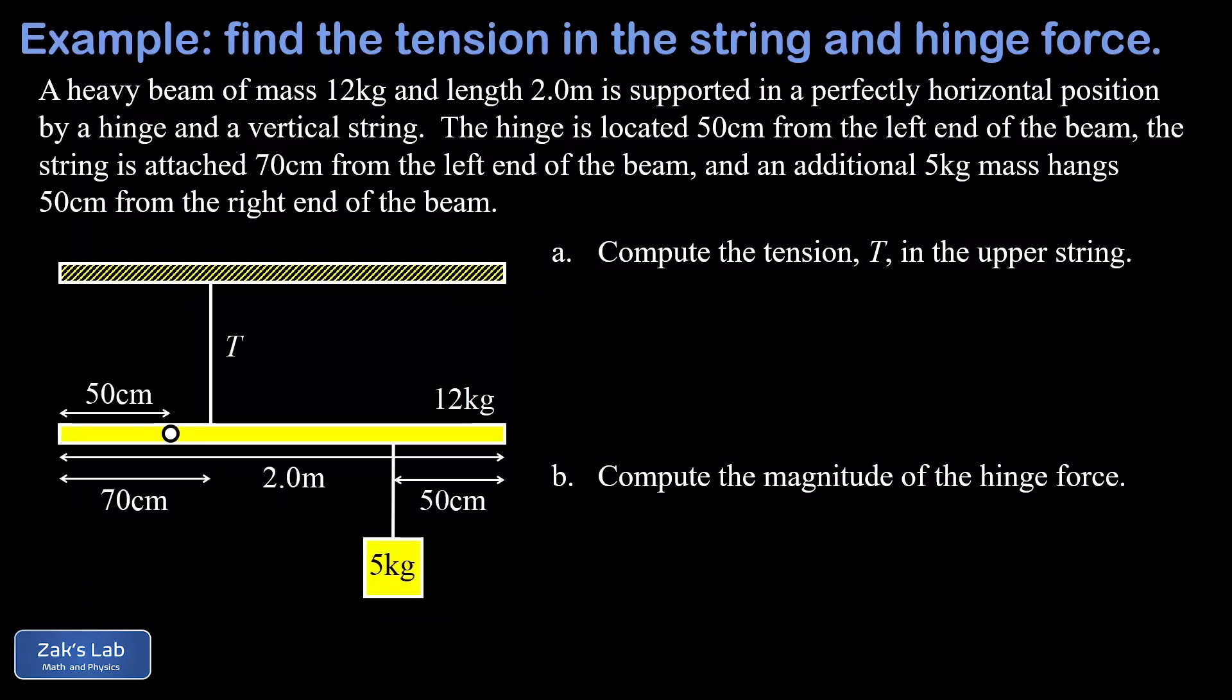In this video we're solving a classic static equilibrium problem where we have a heavy horizontal beam. This has a mass of 12 kilograms and it's suspended from a hinge and a string. So the hinge is this little white spot over here and then we can see the string with an unknown tension in it holding up the rod.